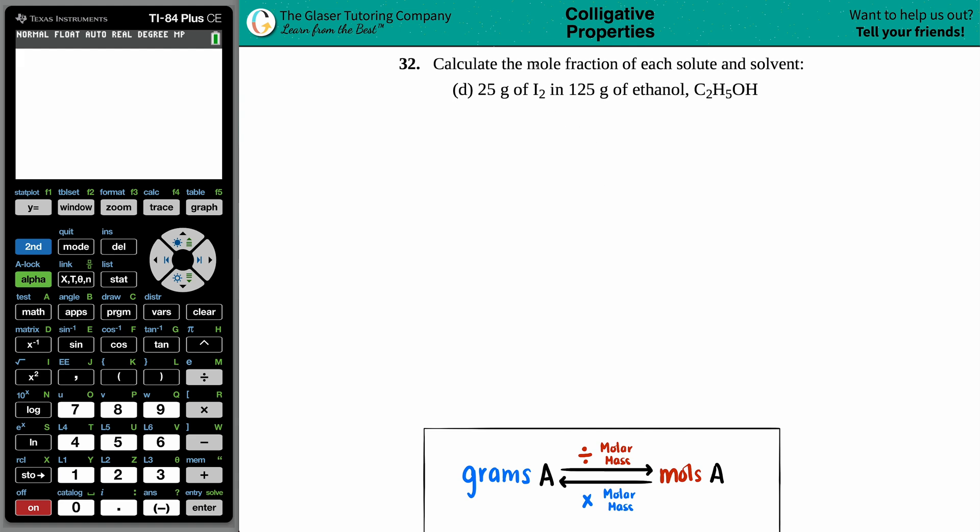Number 32. Calculate the mole fraction of each solute and solvent. In this case, we have 25 grams of I2 that's in 125 grams of ethanol, which is C2H5OH.